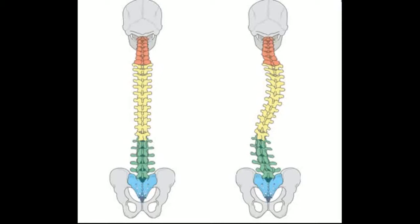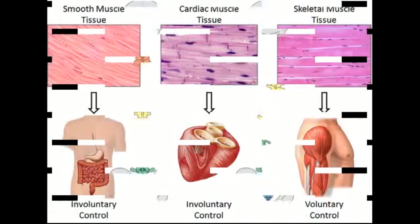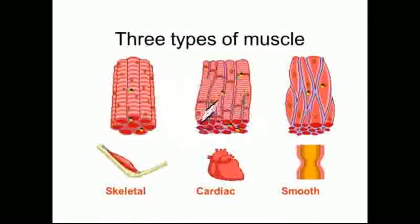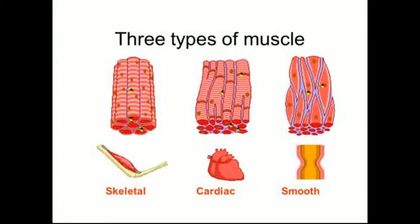So there are three of them. There is the skeletal muscle, the cardiac muscle, and the smooth muscle. These are the three types. We are trying to keep the joints in their muscles. This is the skeletal muscle.